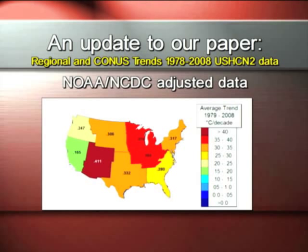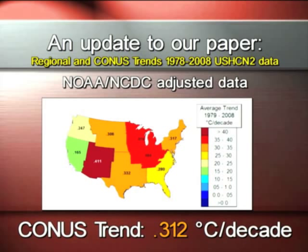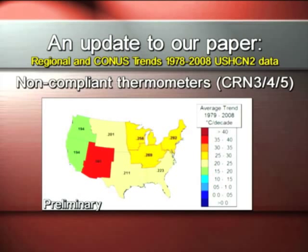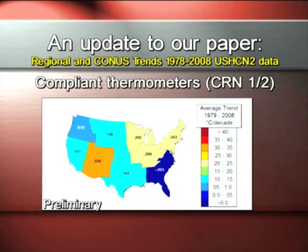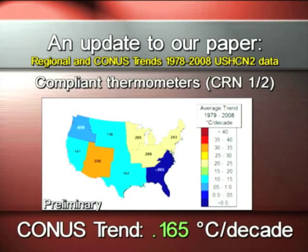We've done some additional studies using a new technique that I want to show you. This is what NOAA says the United States looks like in terms of temperature trend — the CONUS trend is 0.312 degrees C per decade using the adjusted homogenized data. This is the data from non-compliant thermometers — 0.248 without any adjustments, the raw data. And then this is the data associated with compliant thermometers that meet the siting standards — 0.165. These are new numbers based on our new technique, and I owe some inspiration to Dr. Richard Muller of BEST for some of those ideas.